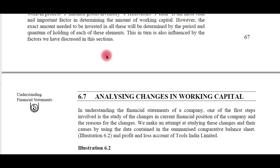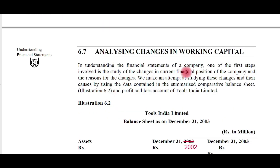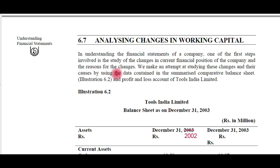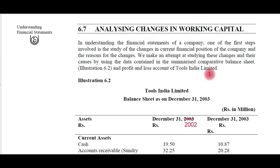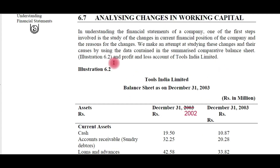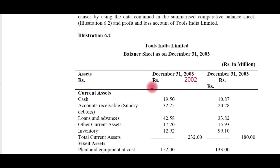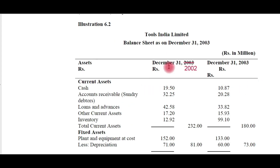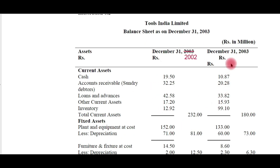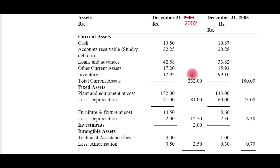Analyzing changes in working capital: one of the first steps in understanding the financial statements of a company is studying changes in its current financial position and the reasons for those changes. We attempt to study these changes using data from the summarized comparative balance sheet. Illustration 6.2 provides balance sheet data on two dates — December 31, 2002 and December 31, 2003 — which we will compare to analyze changes in working capital.